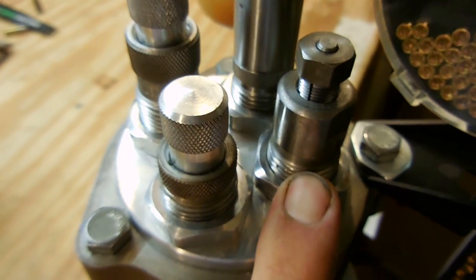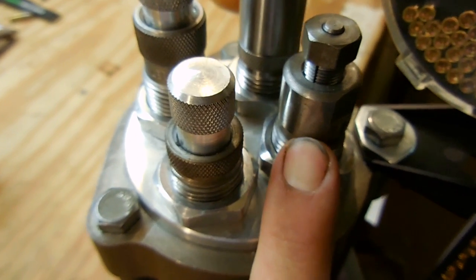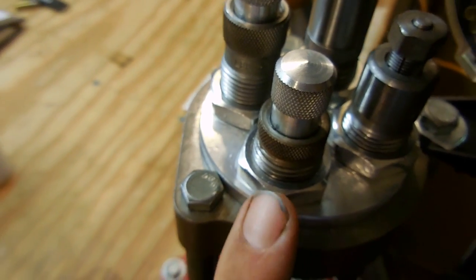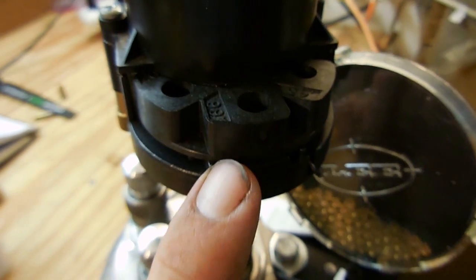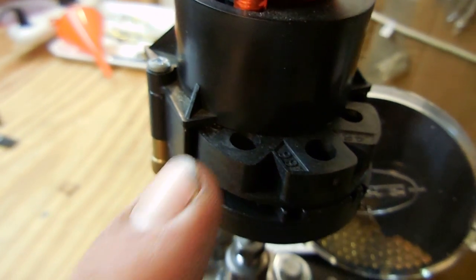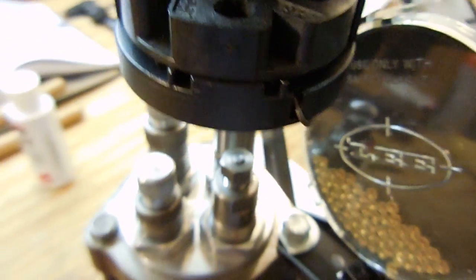I'm using a carbide sizing and decapping or depriming die, and then also the carbide factory crimp die. The auto disc powder measure I'm using, the 0.53 cc cell inside the powder measure, and it drops a perfect charge almost every time.